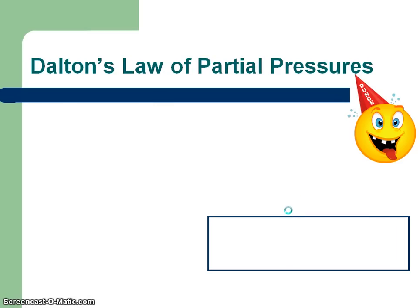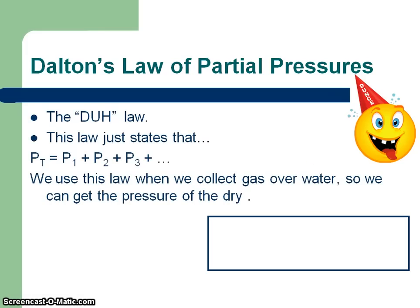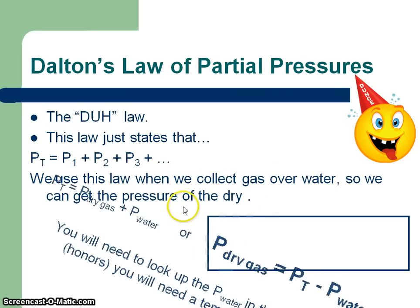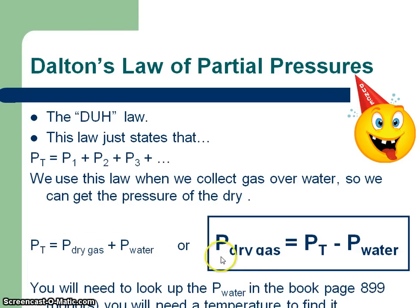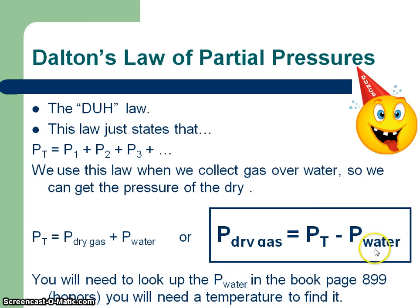Another law is Dalton's law of partial pressures — I call it the "duh" law. It basically says the total pressure equals all the little parts: P₁ + P₂ + P₃. We use this law when we collect gas over water so we can get the pressure of the dry gas. Total pressure equals dry gas pressure plus water vapor pressure. Usually we're solving for dry gas pressure: P(dry gas) = P(total) − P(water). We'll have to look up the water vapor pressure on a chart or online.